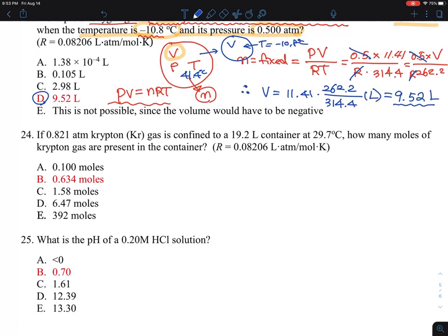Number 24, let's read the problem. Pressure is given, krypton gas, and then this confined volume, so volume is there, and the temperature is there. Pressure, volume, temperature is there. How many moles? So this N is the question, present in this container. This problem is actually quite easy. Once again, PV equal nRT, so N is PV over RT.